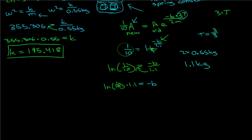And this equals negative B. Now, the natural log of 1/10 is a negative number, so we're solving for the positive value of B. So B equals, if you solve this with a calculator, 2.533.